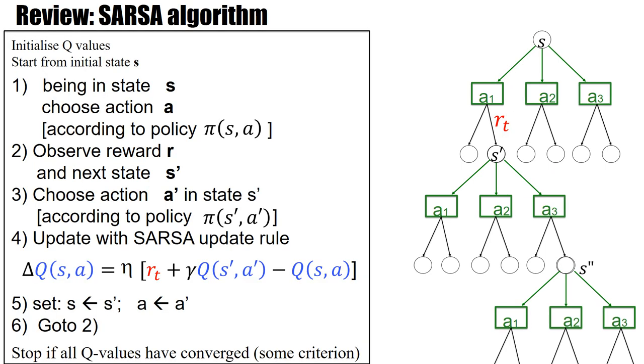Now the SARSA algorithm implements this state action pair condition, this consistency condition, between state action pairs. Let's start in this state S. We choose a first action. That means we are on this branch here.